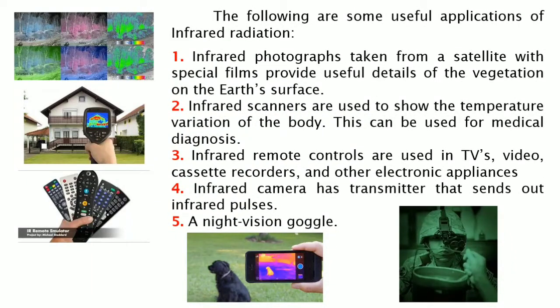Some useful applications of infrared radiation include: 1. Infrared photographs taken from satellites with special films provide useful details of the Earth's vegetation. 2. Infrared scanners show temperature variations of the body and are used for medical diagnosis — for example, thermal scanners used during the pandemic to check temperatures at store entrances. 3. Infrared remote controls are used in TVs, video cassette recorders, and other appliances. 4. Infrared cameras have a transmitter that sends out infrared pulses. 5. Night vision goggles, commonly used by soldiers in the field.